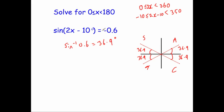Because it's negative 0.6, it means we're going to be looking for the quadrants where sine is negative. Sine is positive in A and S, so it's going to be T and C — the bottom two.